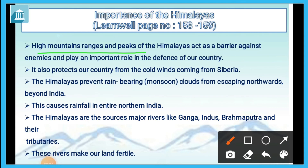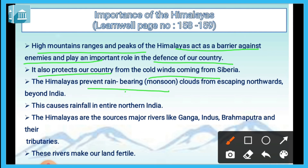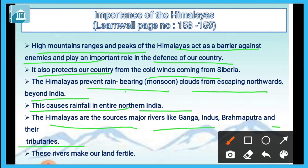The high mountain ranges and peaks of the Himalayas act as a barrier against enemies and play an important role in the defense of our country. They also protect our country from cold winds coming from Siberia. The Himalayas prevent rain-bearing monsoon clouds from escaping northward beyond India, causing rainfall across entire northern India. The Himalayas are the source of major rivers like Ganga, Indus, Brahmaputra and their tributaries, which make our land fertile.